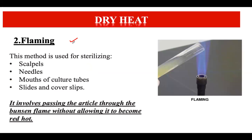Next is the flaming method, used for sterilization of scalpels, needles, mouth of the culture tube, slides, and cover slips. In this method, you pass the article through the Bunsen flame a few times without allowing it to become red hot — you move the object slightly rather than holding it steady in the flame. Commonly sterilized objects by this method include needles and culture tubes.